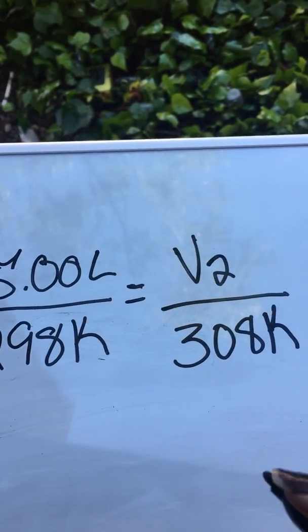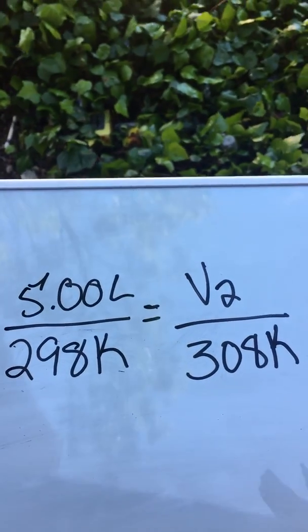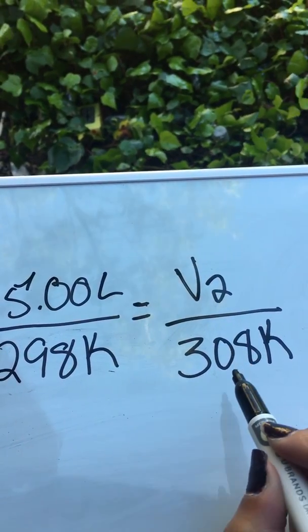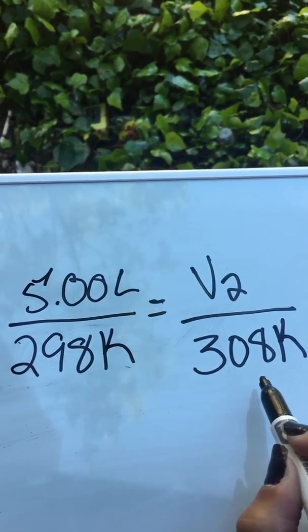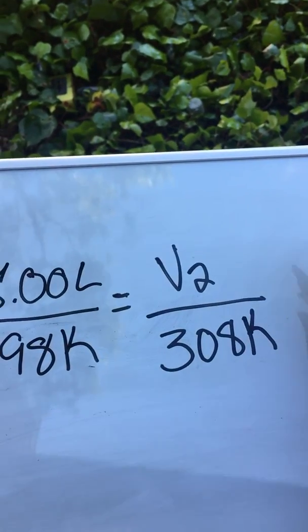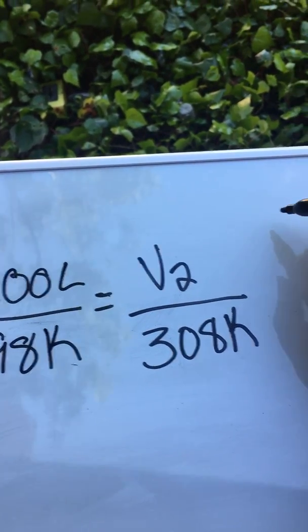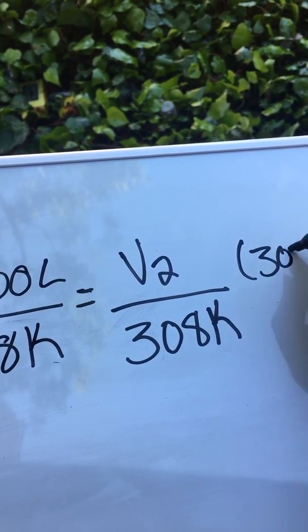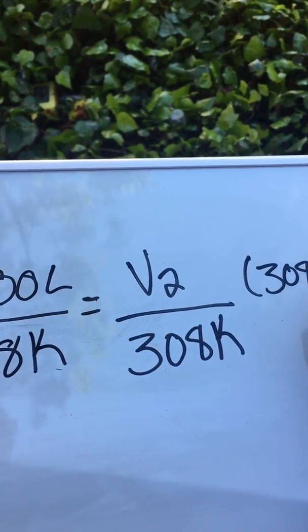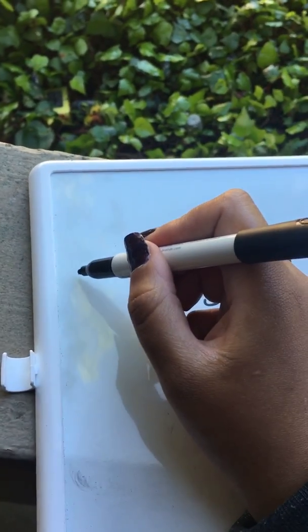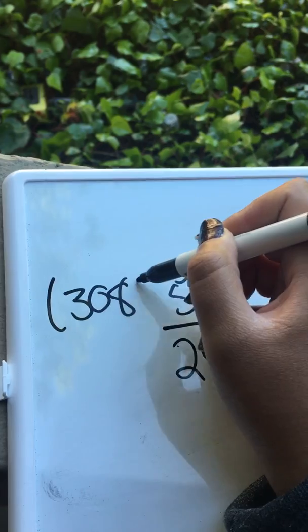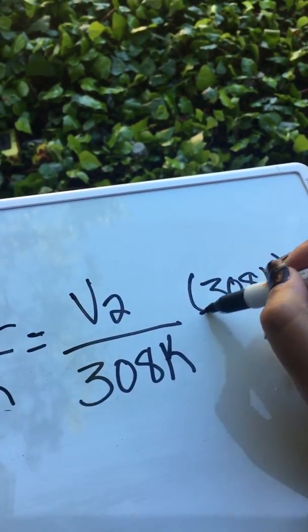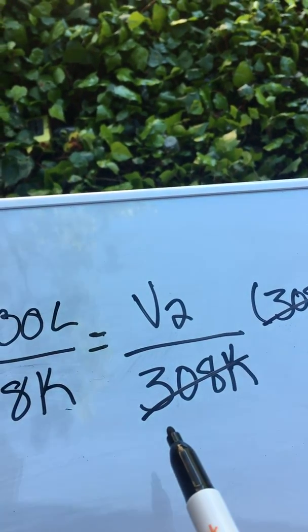So you have this problem, now what do you do? What you need to do next is you need to get this 308 over to this side, and how you do that is to cancel it out. So you have 308... okay, 308. So this cancels out, it's no more.